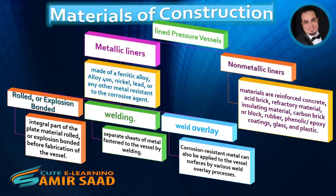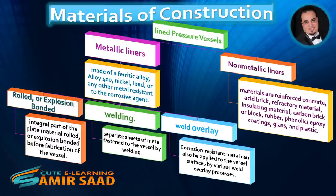Metallic liners may be made of a ferritic alloy, Alloy 400, nickel, lead, or any other metal resistant to the corrosive agent. Metallic liners are installed in various ways: first, rolled or explosion bonded as an integral part of the plate material before fabrication of the vessel; second, welding — separate sheets of metal fastened to the vessel by welding; third, weld overlay — corrosion resistant metal applied to the vessel surfaces by various weld overlay processes.